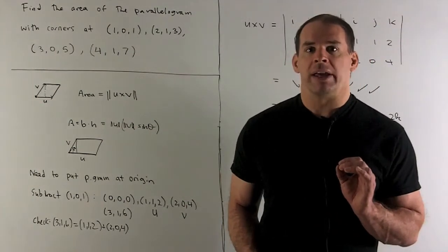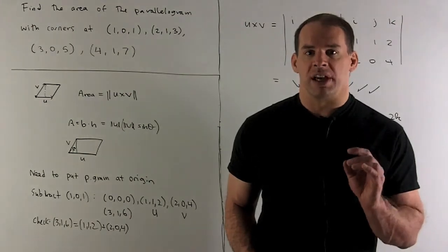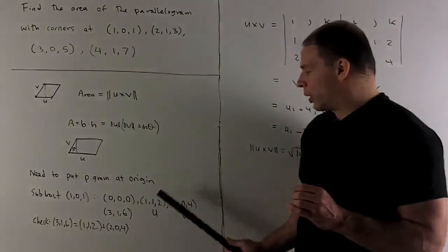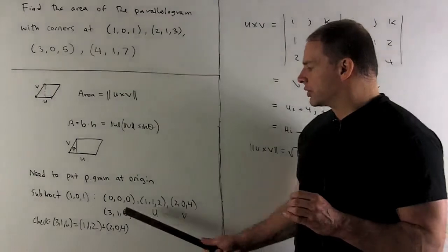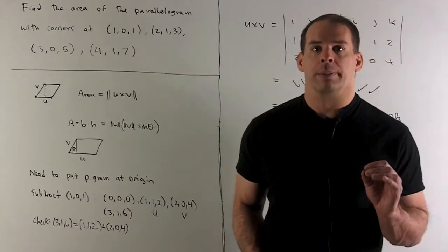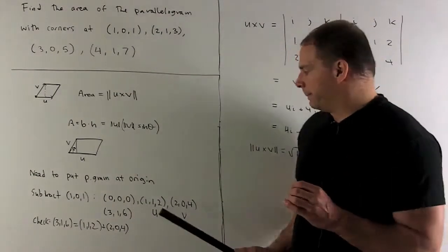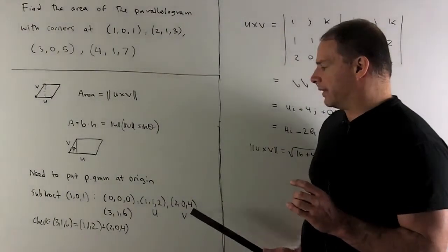Which ones do I use for u and v? Well, if you note, 316 is the sum of 112 and 204, so that's going to be the far corner. So, my u is going to be 112, 204 is going to be my v.